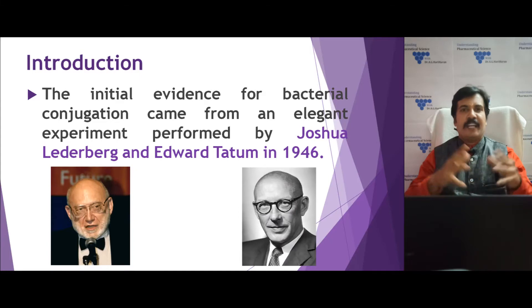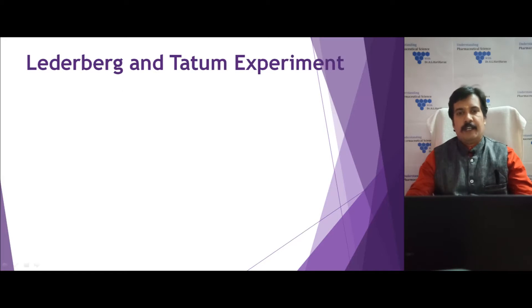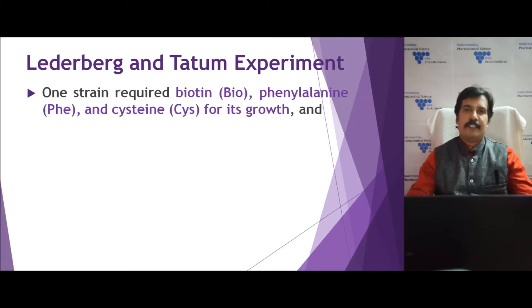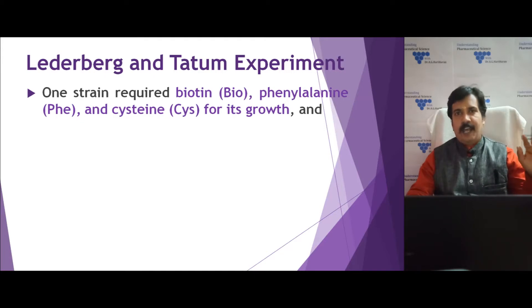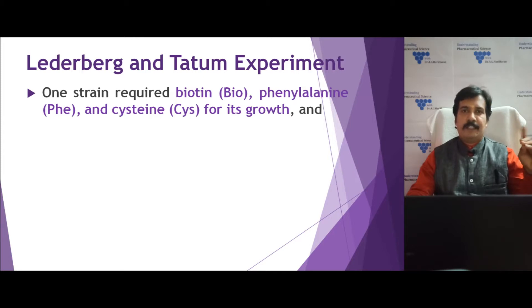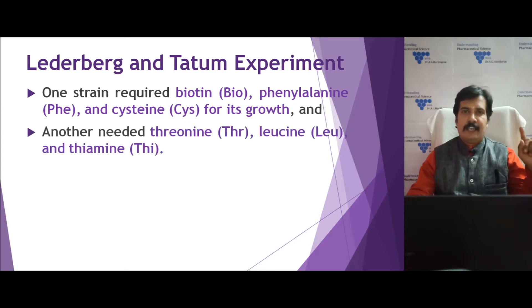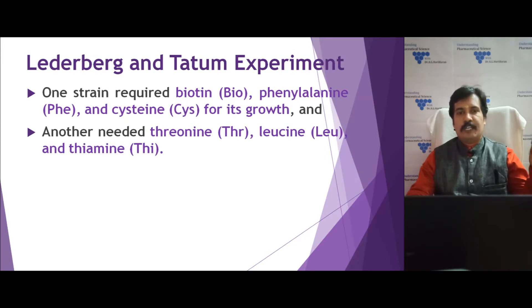They performed an elegant experiment to prove that bacterial conjugation is happening. They took two types of auxotrophic mutant strains. One strain has the ability to grow only in media containing the amino acids biotin, phenylalanine, and cysteine — meaning it lacks the genes bio minus, PHE minus, and CYS minus. The second strain lacks the genes for threonine, leucine, and thiamine, so it can only grow if the media contains those nutrients.